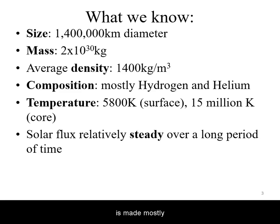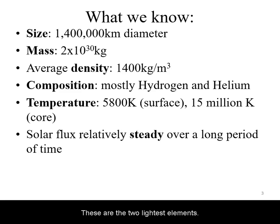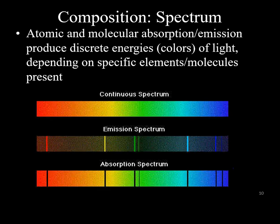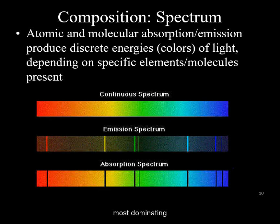The Sun is made mostly of hydrogen and helium — the two lightest elements. One clue to the composition of the Sun is its low density. More direct evidence comes from the spectrum of the Sun: the spectral lines most dominating the solar spectrum are those of hydrogen and helium.